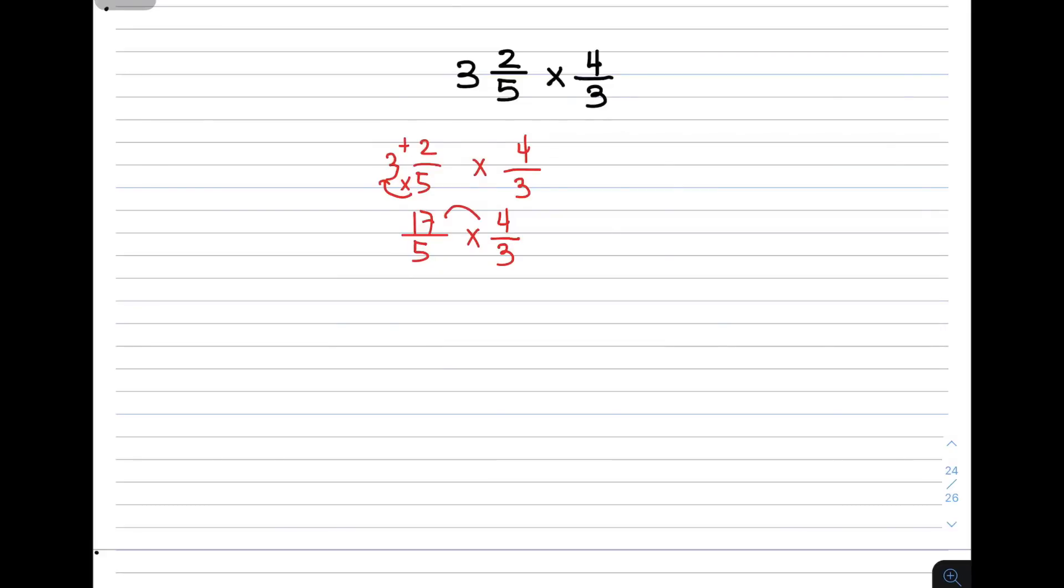Is there anything to cancel? No. So conventional way: 14 times 17 is 68. 4 times 10 is 40, 4 times 7 is 28, so 40 plus 28 is 68 over 15. Converting to mixed number: 68 divided by 15 is 4 remainder 8, so the answer is 4 and 8 over 15.